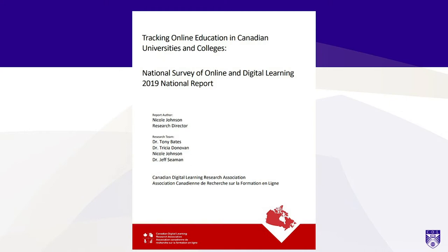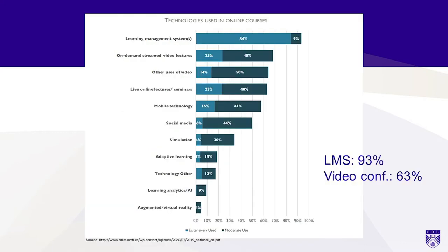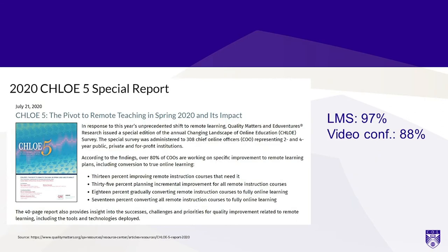Are we in a world of Zoom? In 2019, the Canadian Digital Learning Research Association surveyed all Canadian universities and colleges and found that 93% were using a learning management system, and only 63% were using video conferencing for online courses. During COVID-19, around July, Quality Matters found that 97% of institutions were using a learning management system and 88% were using conferencing — video conferencing jumped up by 25% as a result of COVID-19.